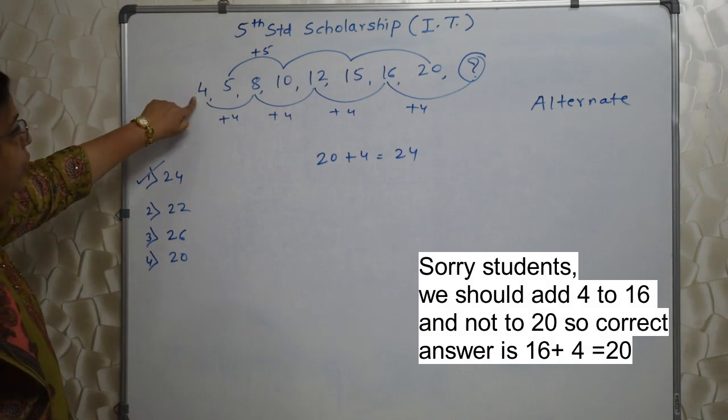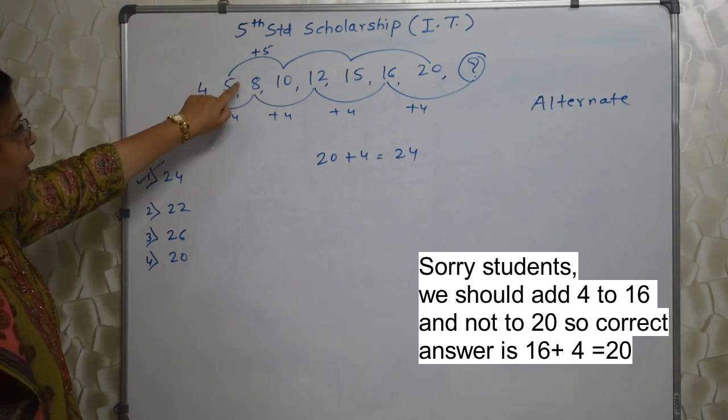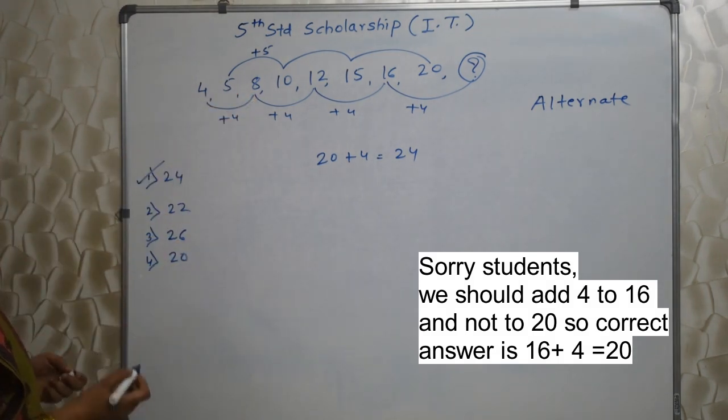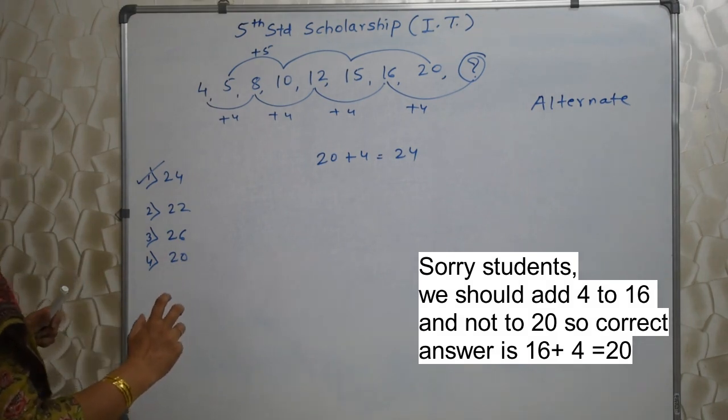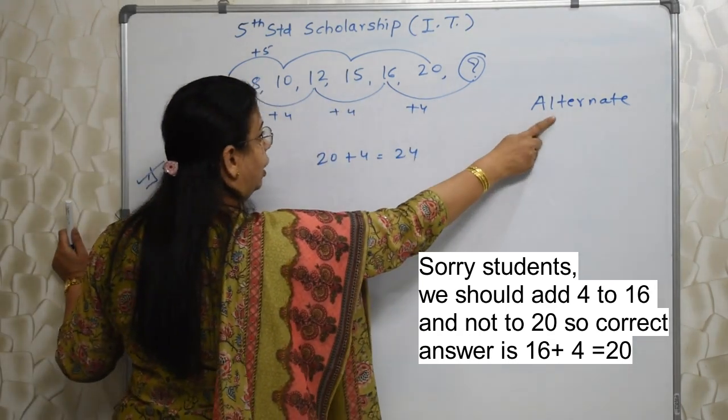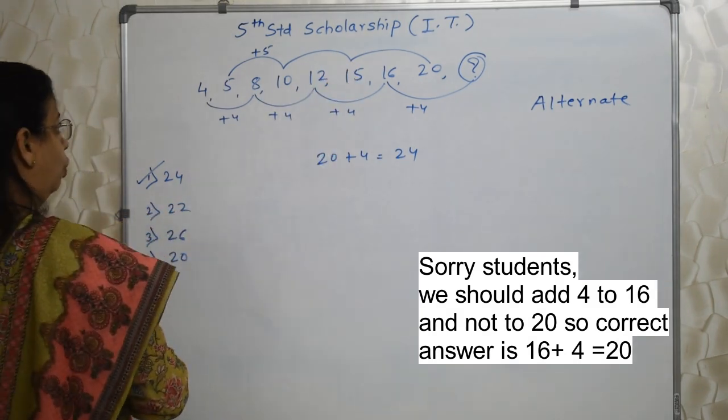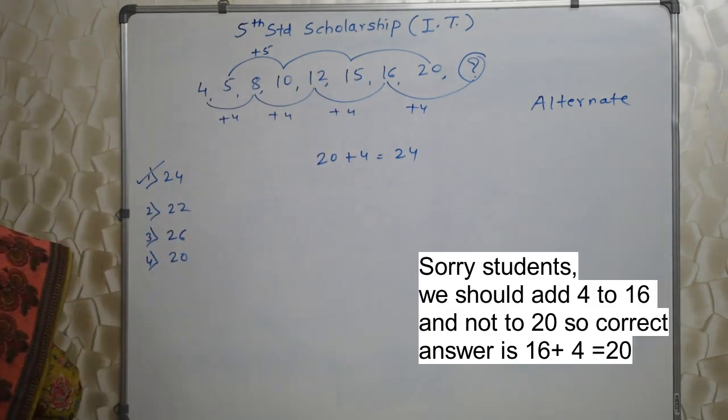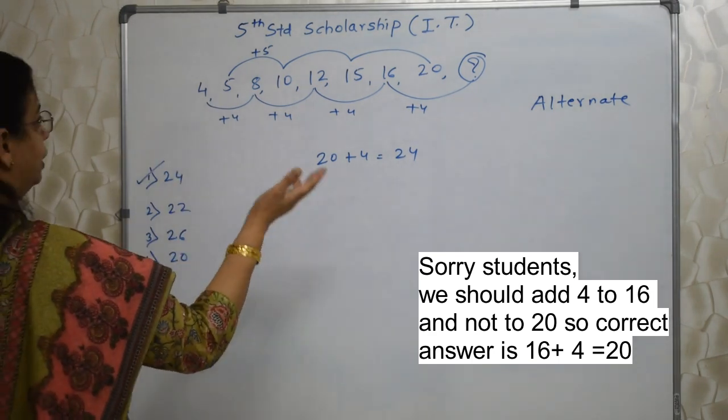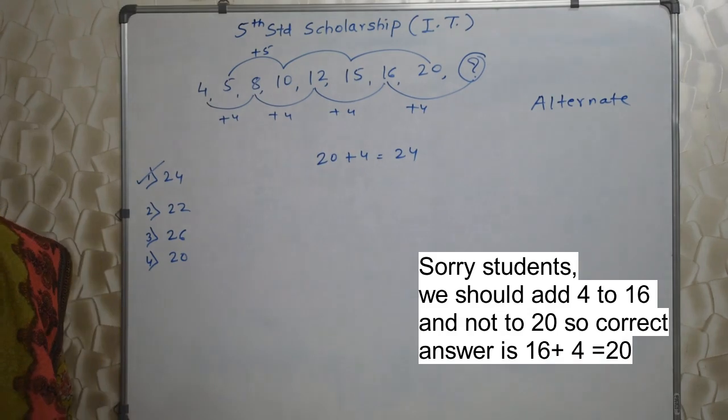Students waste a lot of time finding out the relation of 4 and 5, then 5 and 8, and they don't realize how the numbers are moving because the difference between them do not follow any particular method. So in that case you must try out this alternate series. Then once you find out this is the example of alternate series, finding out the final answer is not a big thing at all.